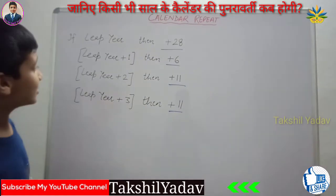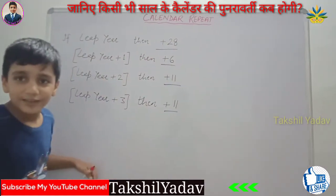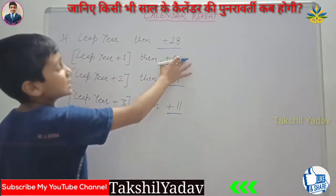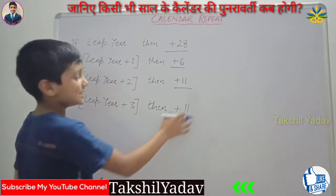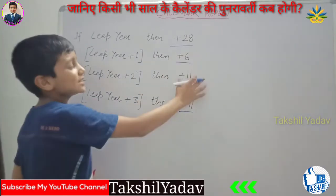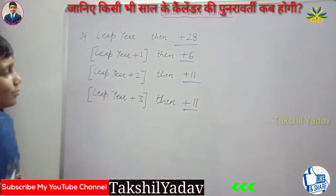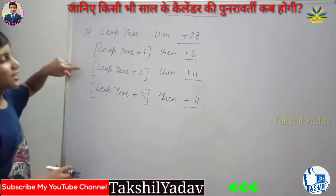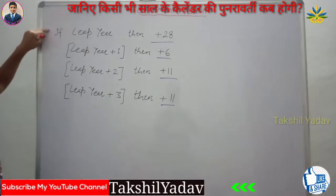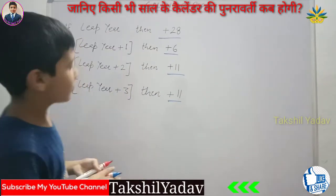The trick to remember: for a leap year we have 28, then 6, 11, 11. Note that 6 plus 11 plus 11 equals 28. So the sum of the repetition intervals for leap year plus 1, plus 2, and plus 3 equals the leap year's own repetition interval of 28. That is the trick to remember it.